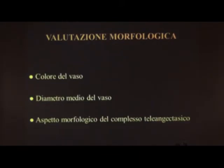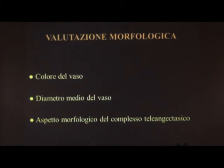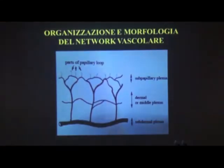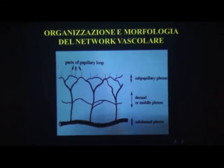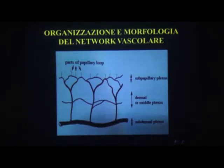Nella valutazione morfologica è importante valutare il colore del vaso: se tende al rosso o al blu, poiché questo fornisce un'indicazione maggiore per quanto riguarda il laser da utilizzare. Il diametro medio del vaso è rilevante sia per la scleroterapia, per le concentrazioni e la quantità di farmaco, sia per la laser terapia, per le fluenze da utilizzare. L'aspetto morfologico del complesso teleangiectasico indica la morfologia per risalire alla localizzazione del reflusso, a livello del derma o del plesso subdermico.